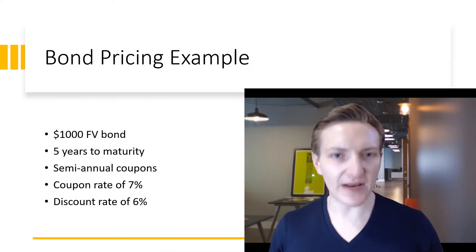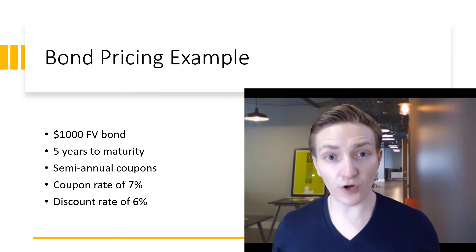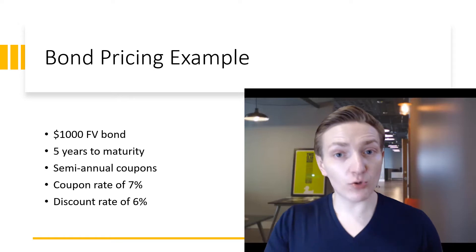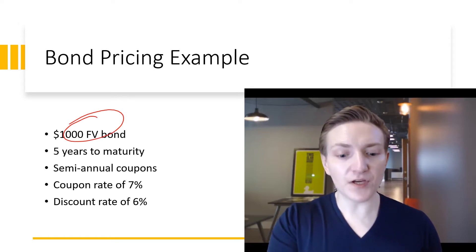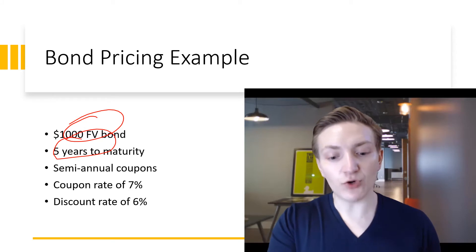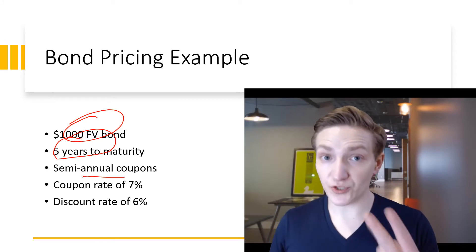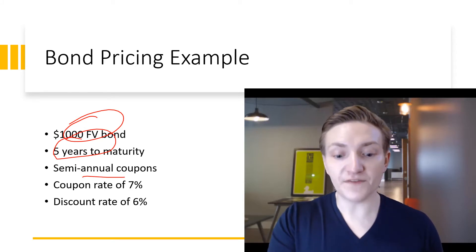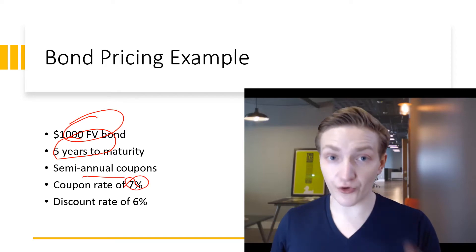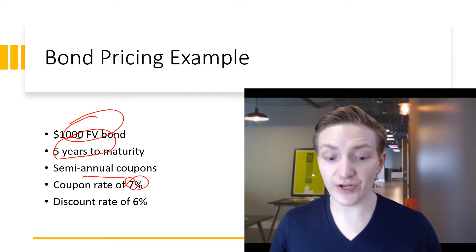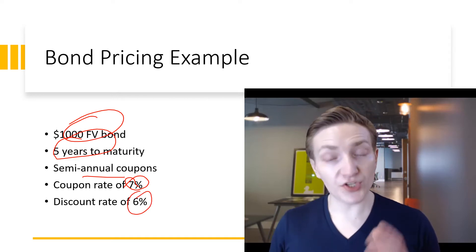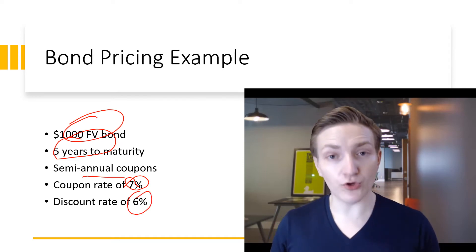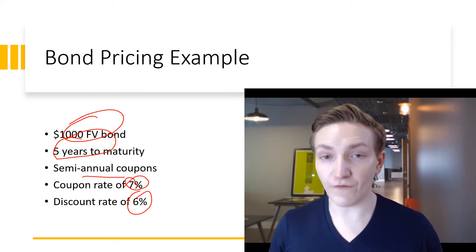We can see this in a basic example. Suppose we're given some information about a bond: a thousand dollar face value, five years until maturity, semi-annual coupons — meaning two coupons per year — a coupon rate of seven percent, which means a three and a half percent coupon every period or every six months, and a discount rate of six percent, which is going to be our yield to maturity used to calculate the present value of the bond's cash flows.